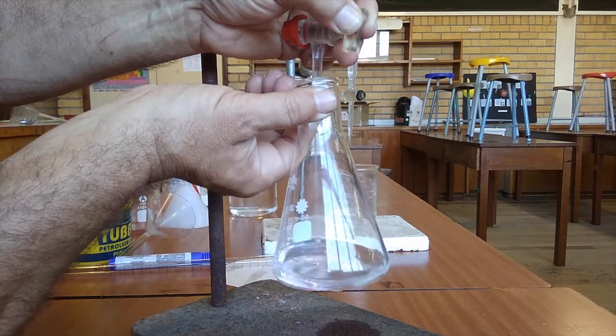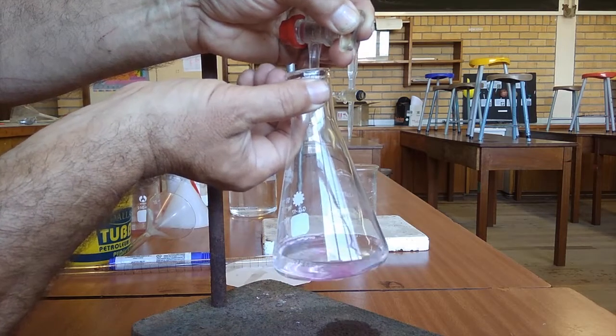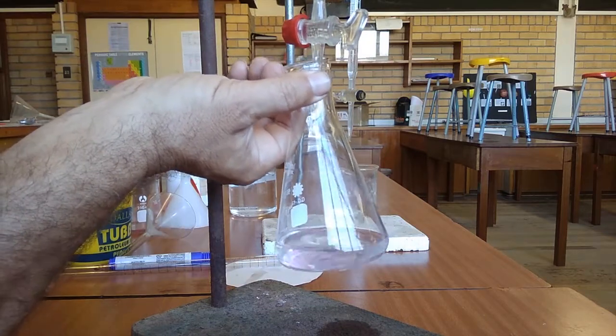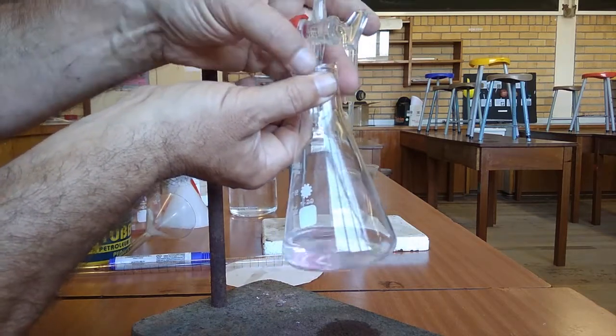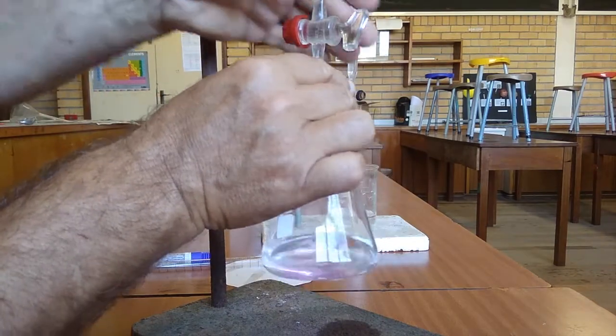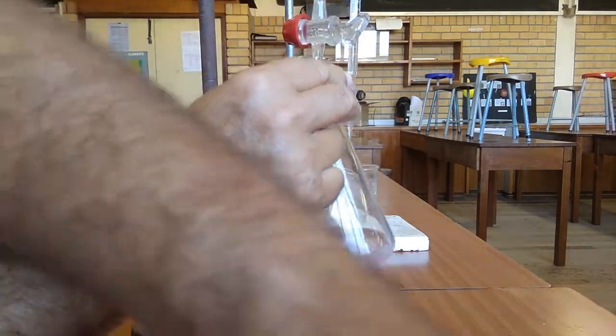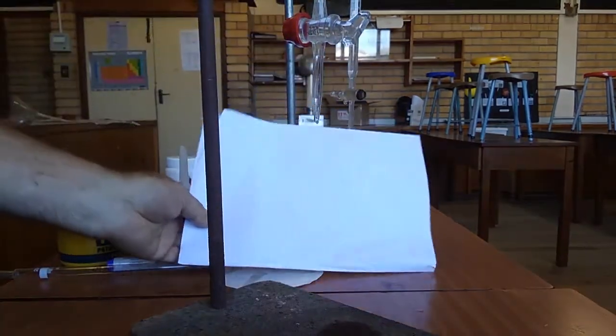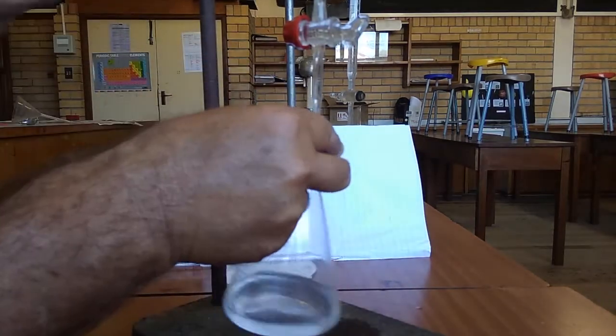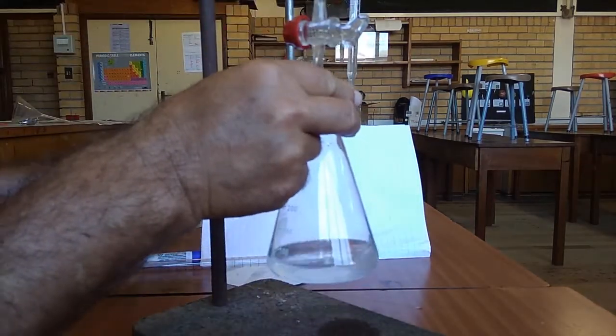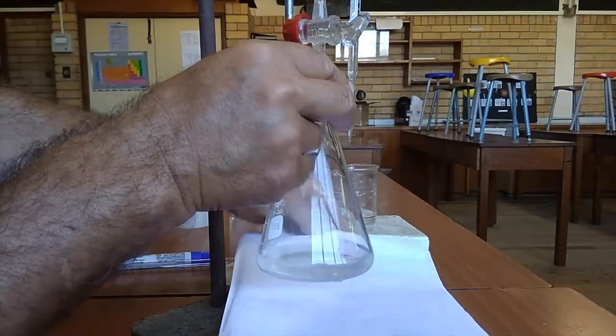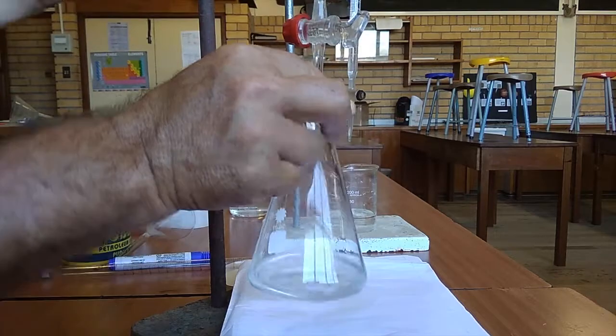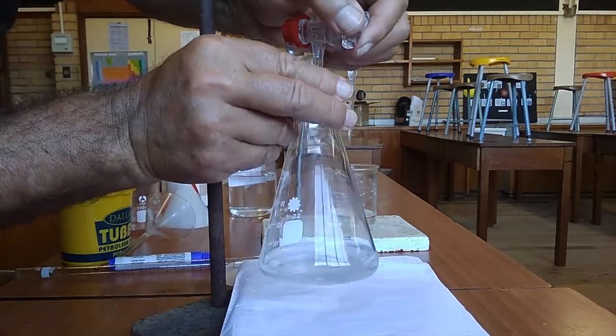Now look, do you notice there's a slight changing in color? With each drop it's beginning to form that slightly bluish, purple, purply look. Let me get something white behind that. We're going to add some more sodium hydroxide and watch until one drop turns it. See how I'm adding drop by drop?